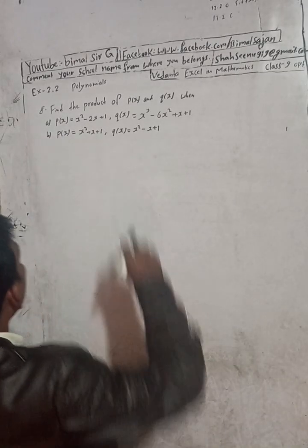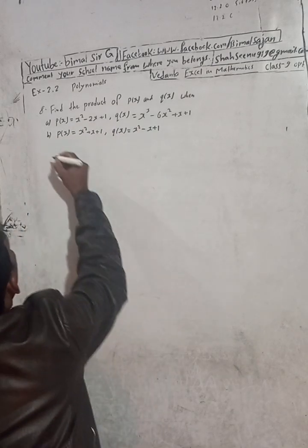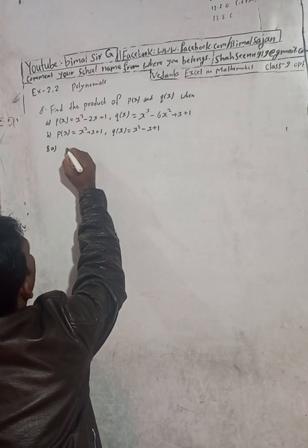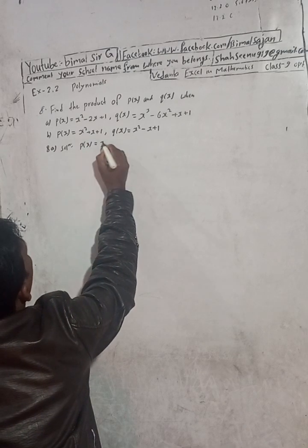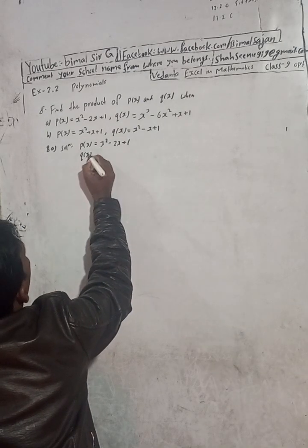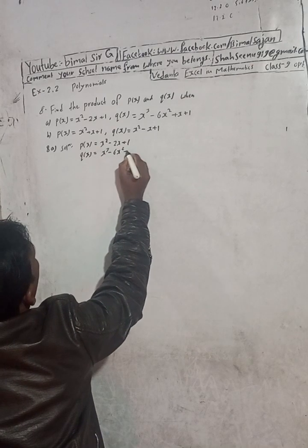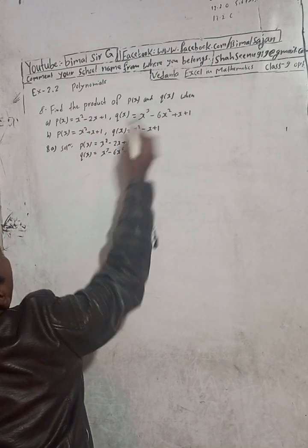Here the question is: find the product of P of X and Q of X, question number 8. P of X is given and Q of X is also given. So we have to find the product. Now for 8a solution, we have to find the product.